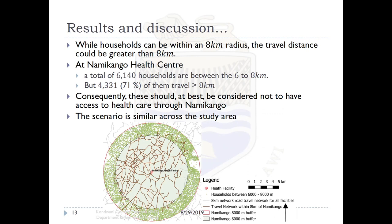When analyzing an individual health facility, the policy says anyone within 8 kilometers of a facility is considered to have access. However, between 6 and 8 kilometers of one facility, we found about 6,000 households — and 71% of those households are actually traveling more than 8 kilometers via the road network. This scenario is occurring for almost every other facility in the study area.